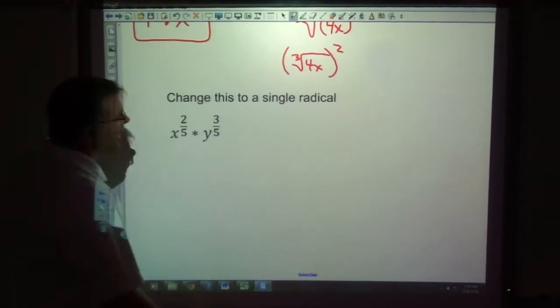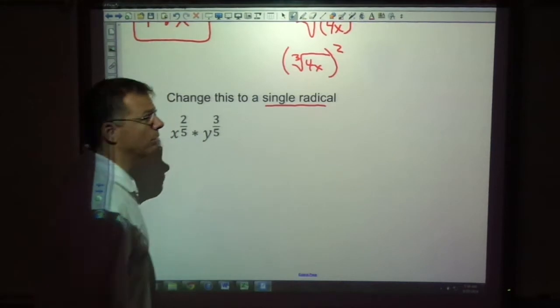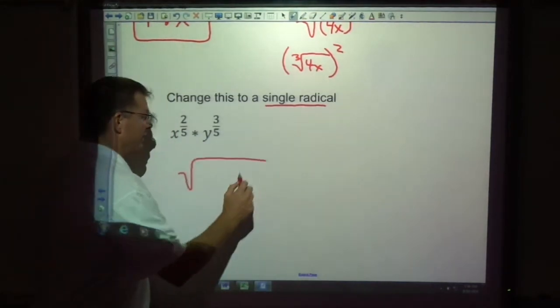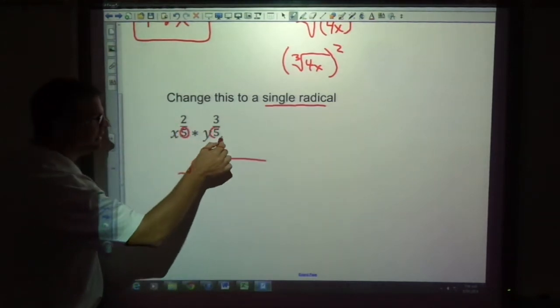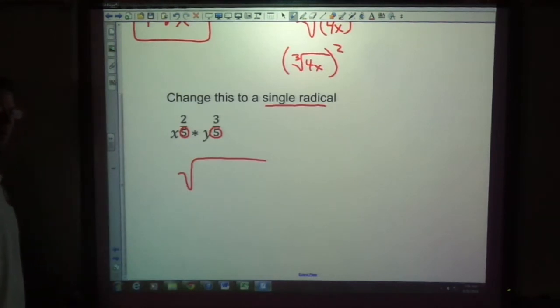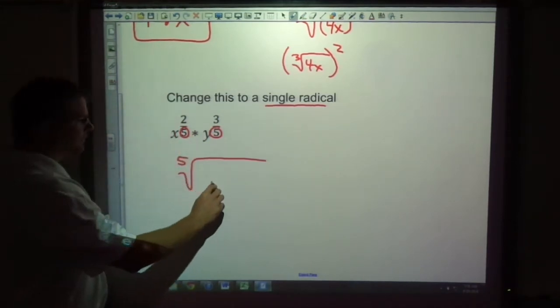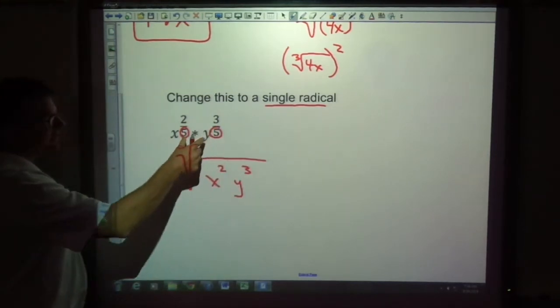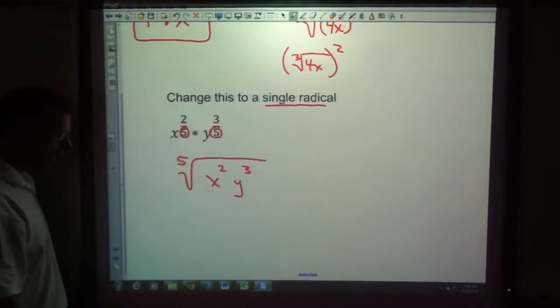Here's a problem where we've got x's and y's together, and it says change this to a single radical. So we're trying to find some kind of radical that would work for everything. And if you notice, when a problem is like this, if we have common denominators, that is very good, because they are both having a root of five, so we can make it the fifth root together of x to the second and y to the third. So if you see multiple things together, look to make common denominators so we can make one root.